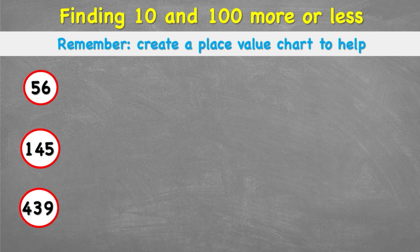Let's look at our last example, 439. A huge number. And let's have a look what 10 less looks like. So let's remember, always put our place value chart in place. That's going to help us remember how to do it.